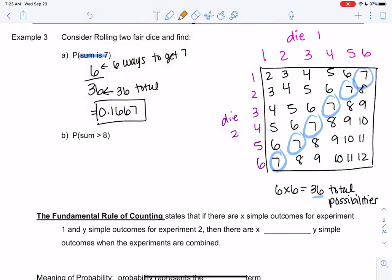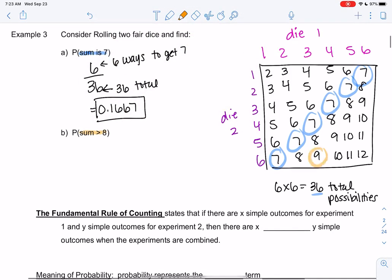So that one's in blue. Let's do orange. And then greater than 8 does not include 8. So that would be a sum of 9. That could also include 10, 11, or 12. So if we count that, we get 1, 2, 3, 4, 5, 6, 7, 8, 9, 10. 10 possibilities out of 36.